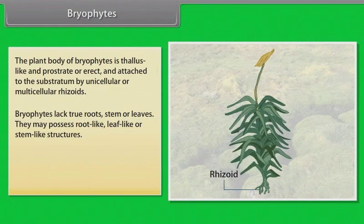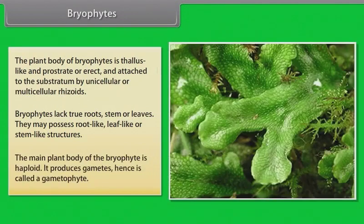Bryophytes lack true roots, stem or leaves. They may possess root-like, leaf-like or stem-like structures. The main plant body of the bryophyte is haploid. It produces gametes, hence is called a gametophyte.